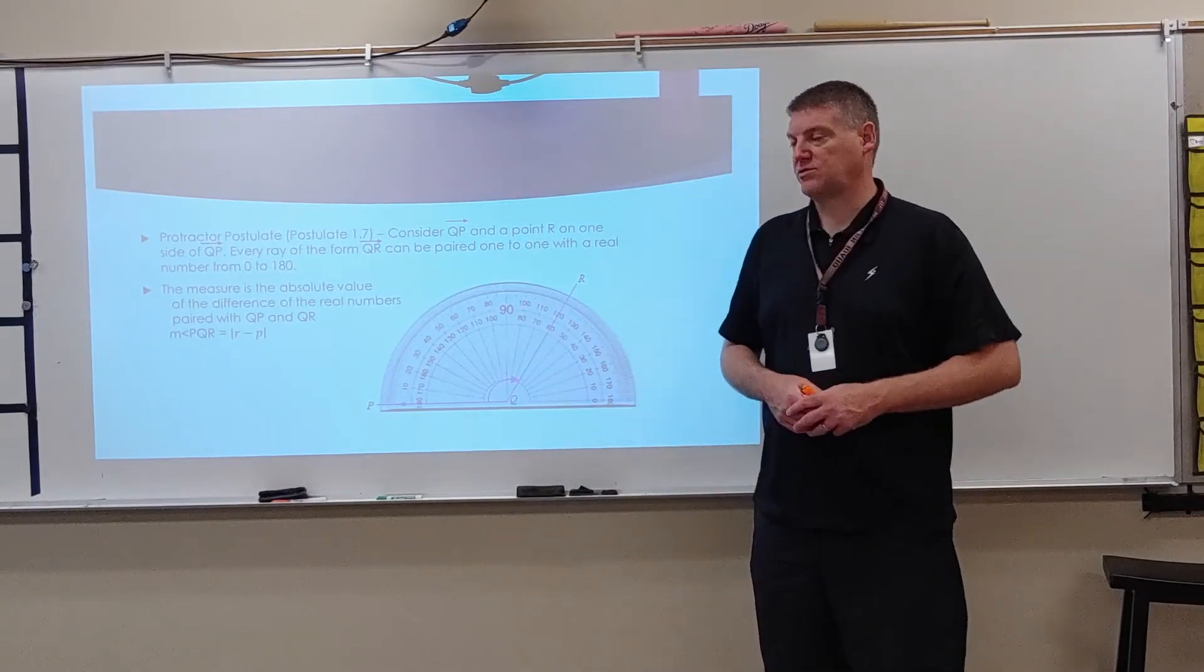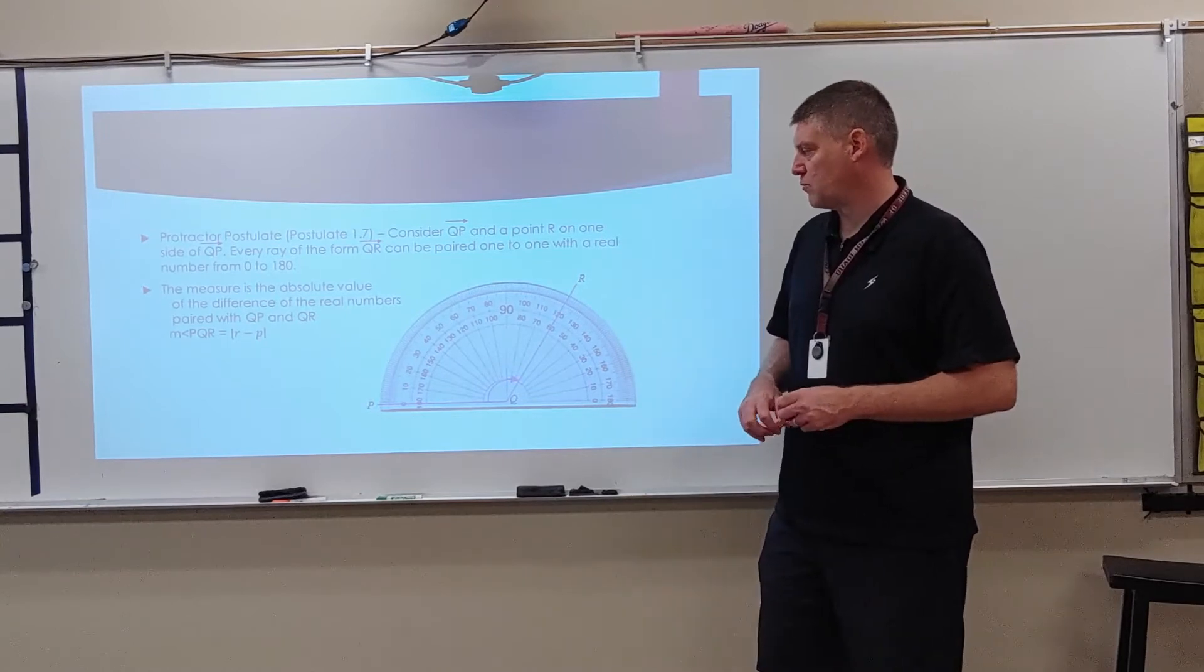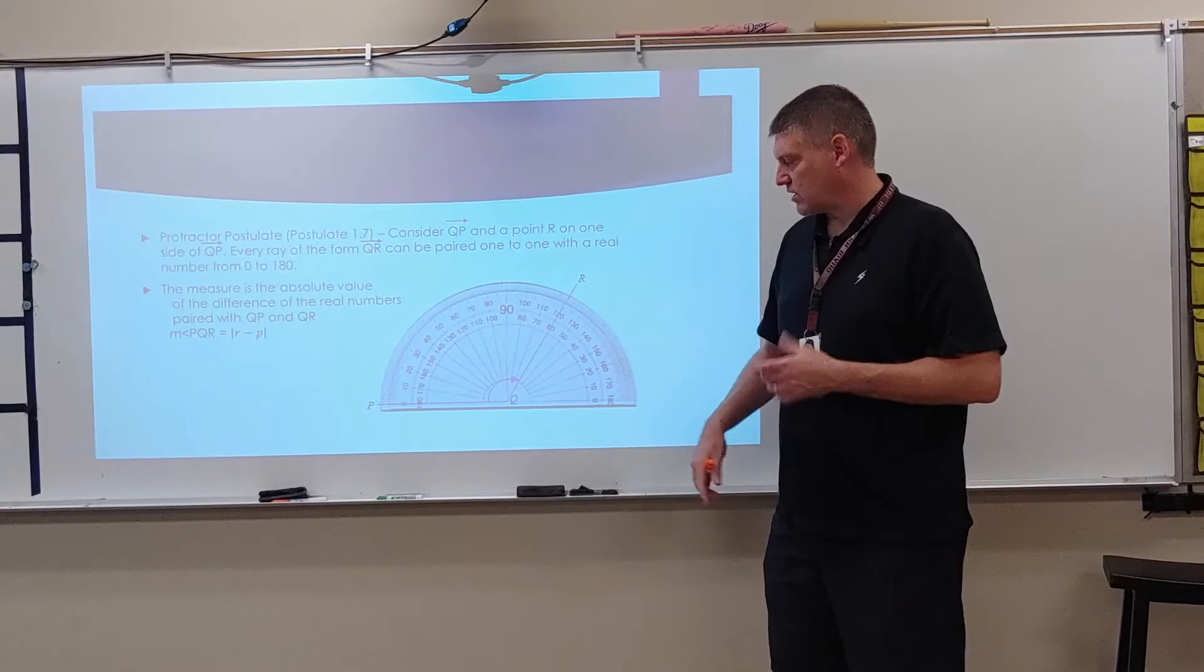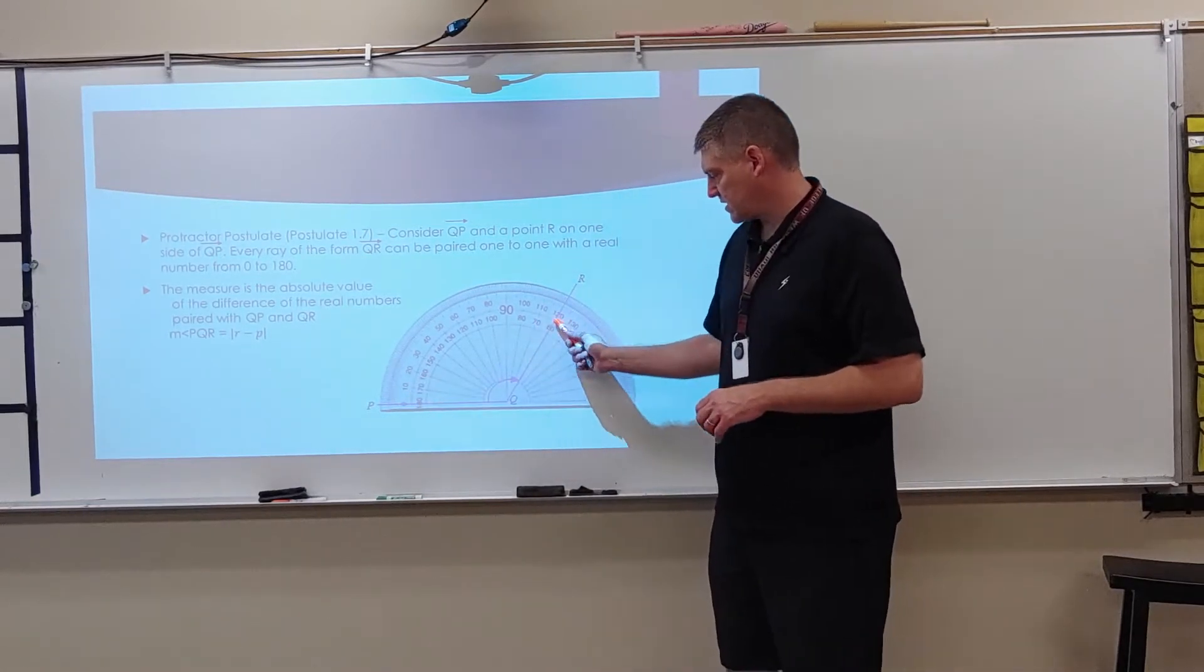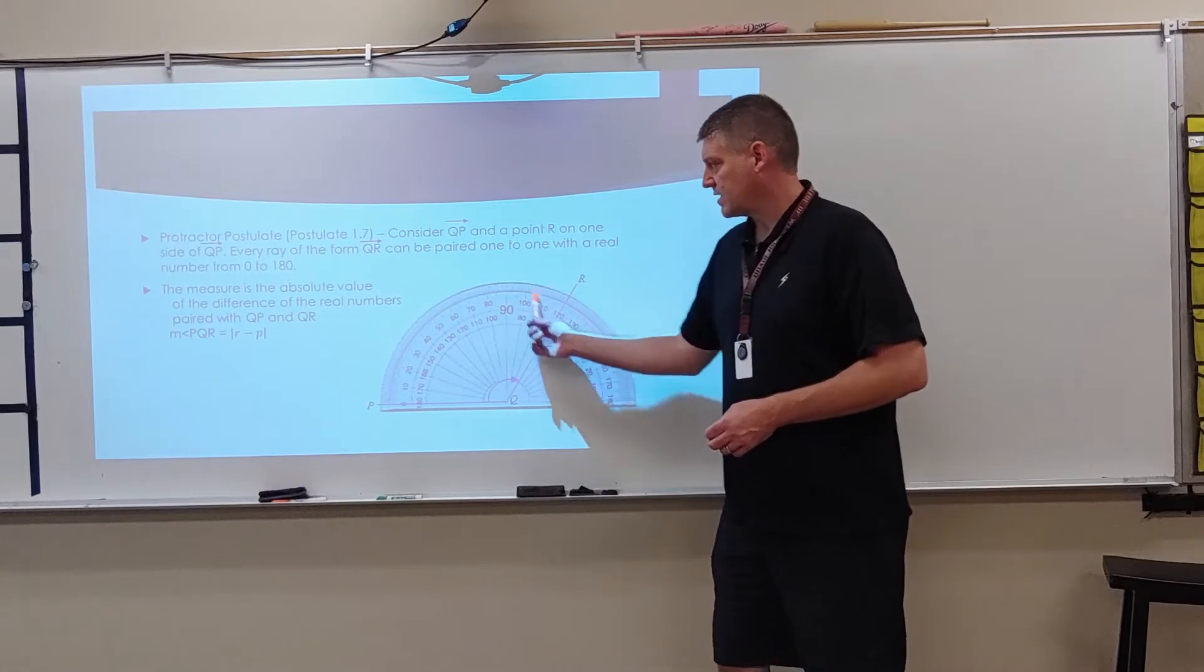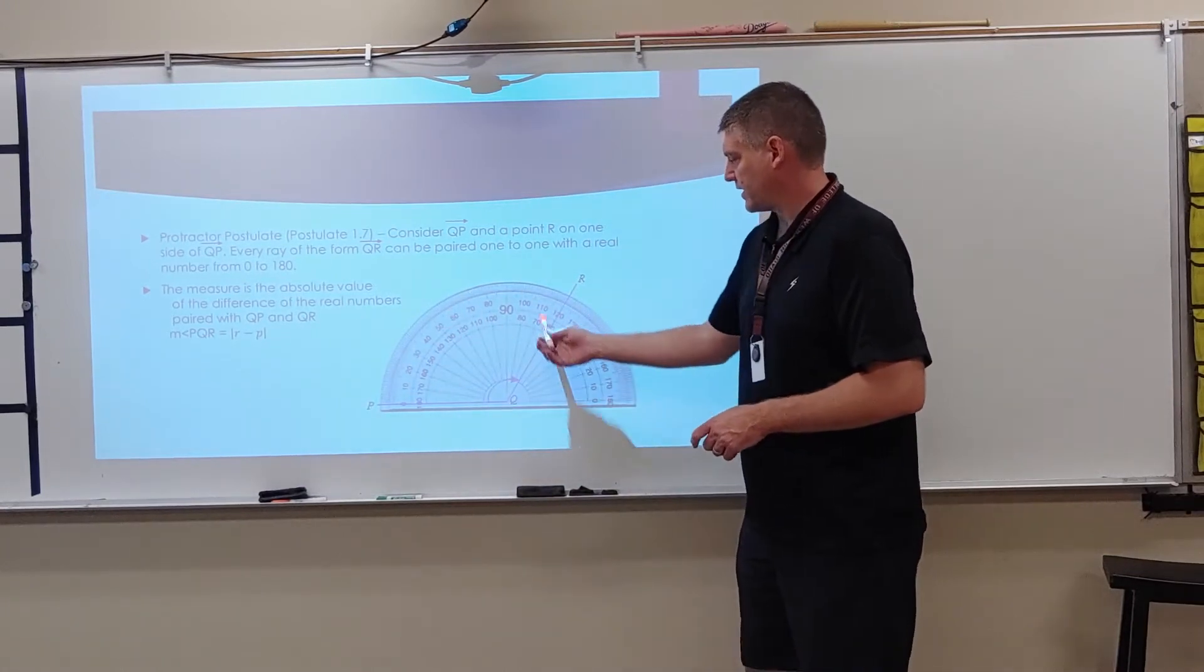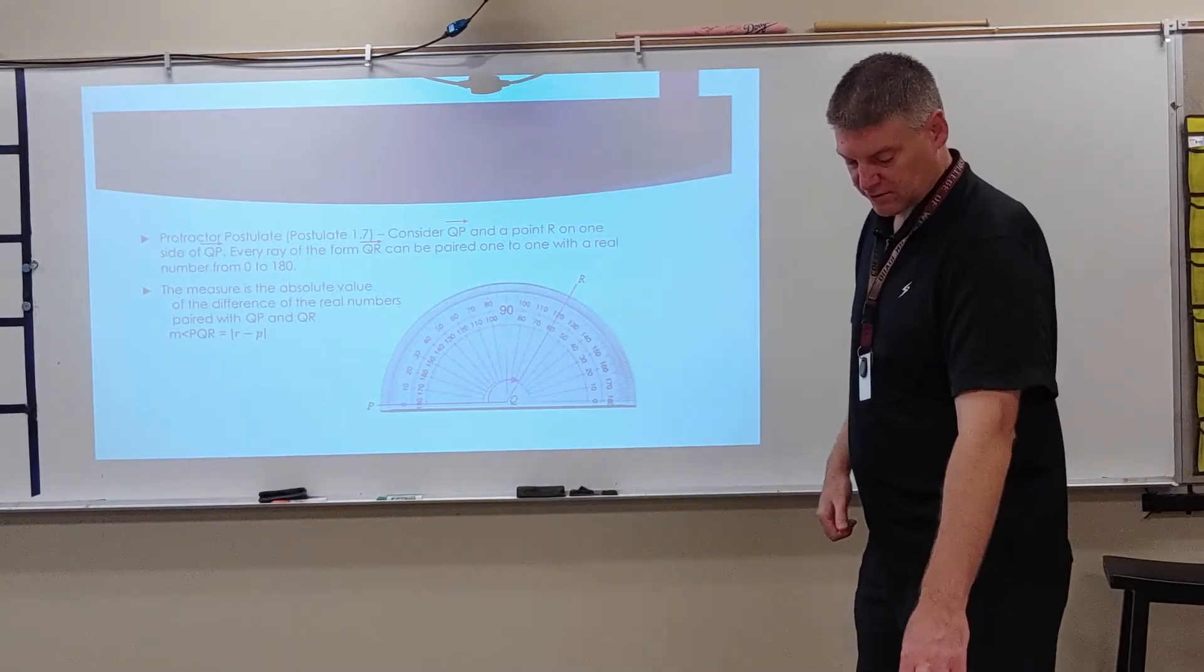The measure is the absolute value of the difference of the real numbers paired with QP and QR. So you just have to look here. So what they're saying here is I could have used 180 and 60 and said, oh, 60 minus 180 is negative 120. The absolute value of that is 120. The nice thing is protractors. If you actually have a physical protractor, it does have the two sets of numbers. So they'll give you that absolute value.